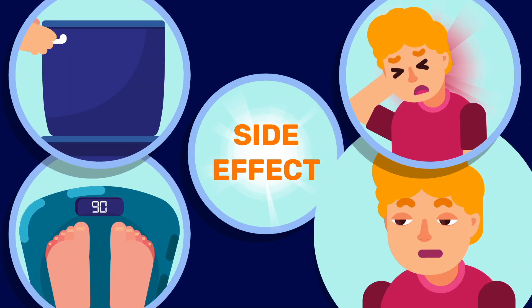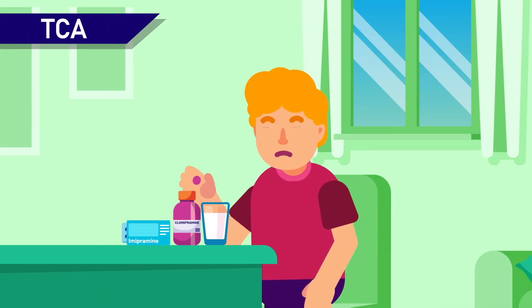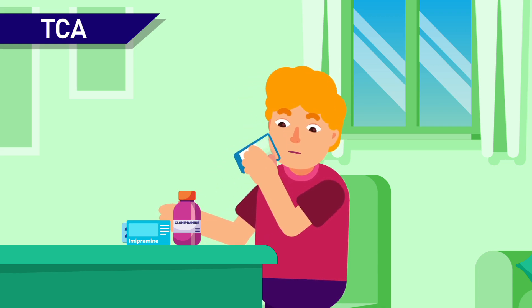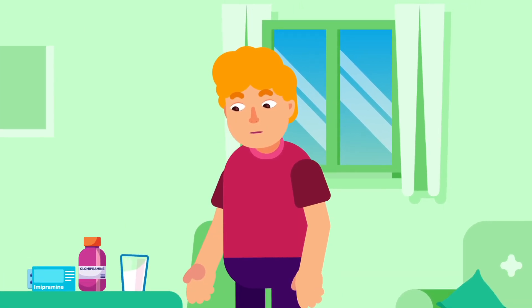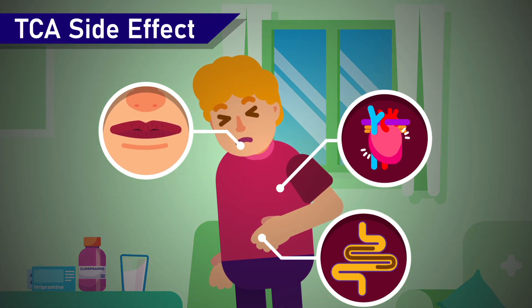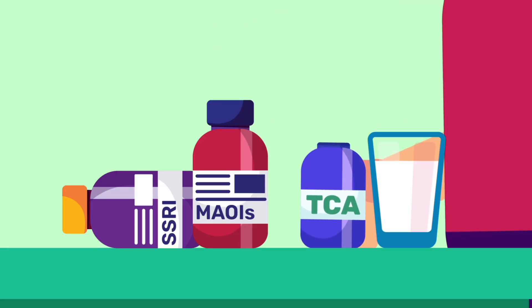Tricyclic antidepressants (TCAs) are usually second-line, including imipramine and clomipramine. Common side effects are dry mouth, constipation, and can induce cardiac arrhythmia in susceptible patients. Monoamine oxidase inhibitors (MAOIs) include phenelzine and tranylcypromine.